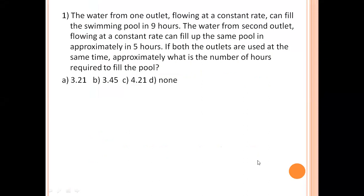The first question is: water from one outlet flowing at a constant rate can fill the swimming pool in 9 hours. The water from second outlet flowing at a constant rate can fill the same pool approximately in 5 hours. If both the outlets are used at the same time approximately, what is the number of hours required to fill the pool? So here, first pipe, one-hour work is 1 by 9. Second pipe, one-hour work is 1 by 5. Combined one-hour work to find both. So, 45 is the LCM. 9 divides 5 times, 5 divides 9 times, 14 by 45.